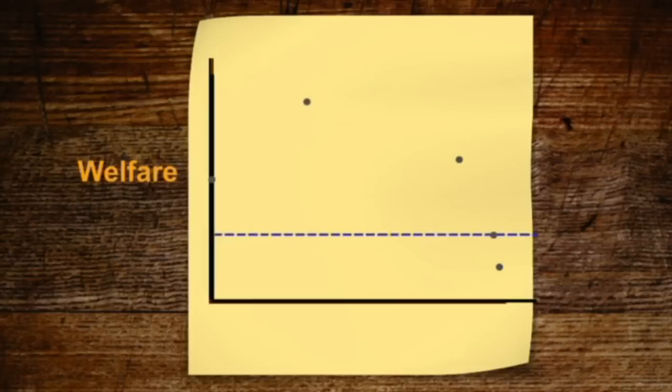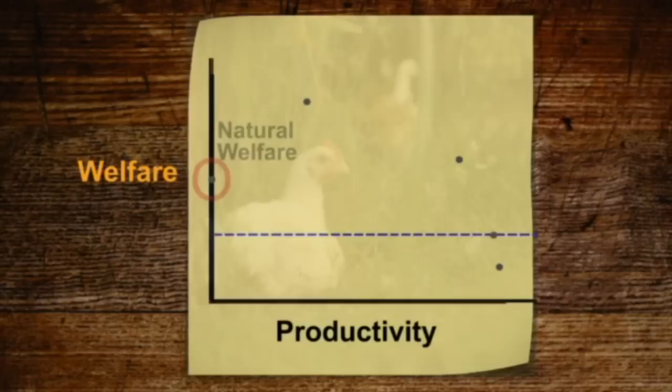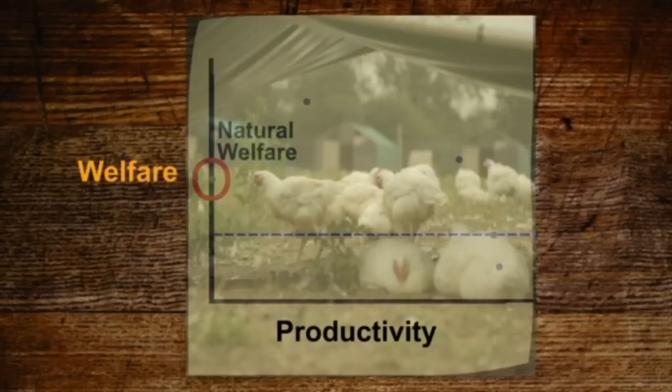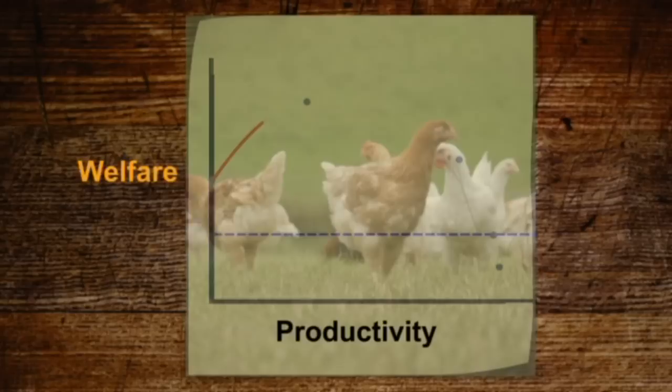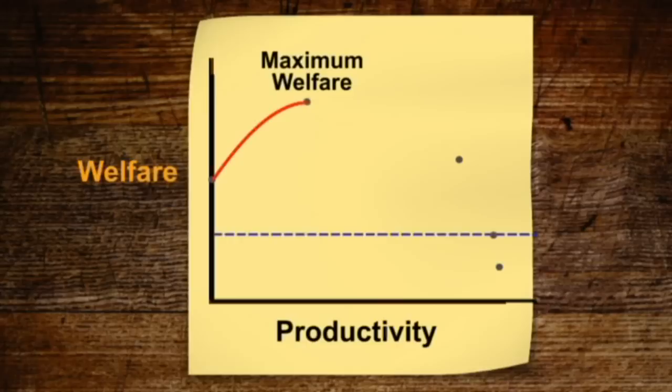Welfare and productivity: modern food production can come into conflict with animal welfare. This graph shows the relationship between welfare, which benefits animals, and productivity, which benefits people. Without human intervention, animals have a natural state of welfare. If we provide good management — such as food, protection from predators, veterinary care and attention to their wellbeing — then production increases and welfare can reach a maximum level.